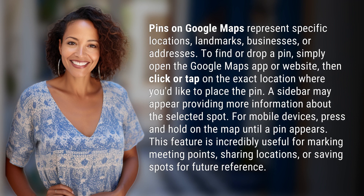To find or drop a pin, simply open the Google Maps app or website, then click or tap on the exact location where you'd like to place the pin. A sidebar may appear providing more information about the selected spot. For mobile devices, press and hold on the map until a pin appears.